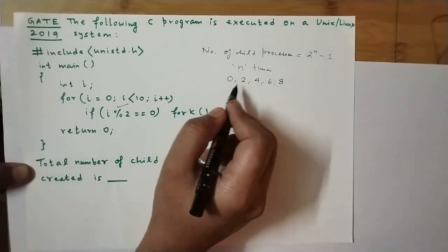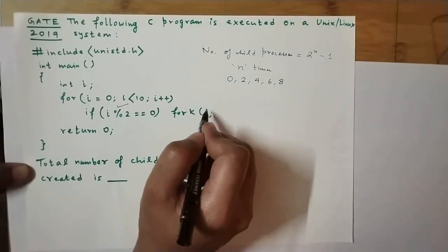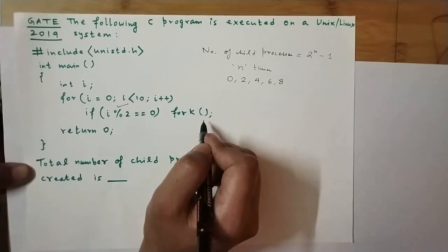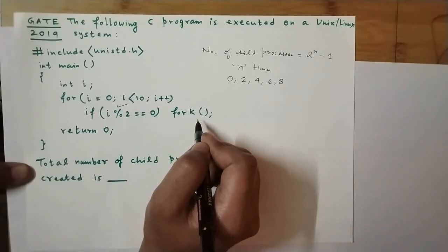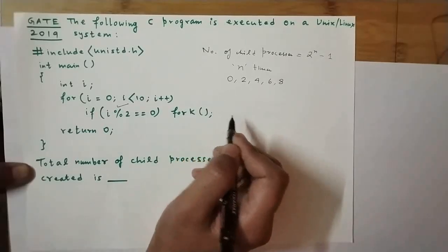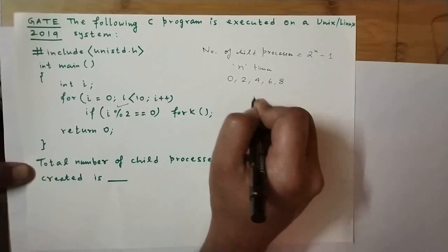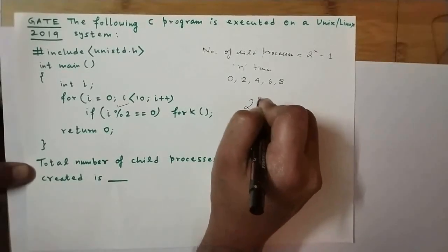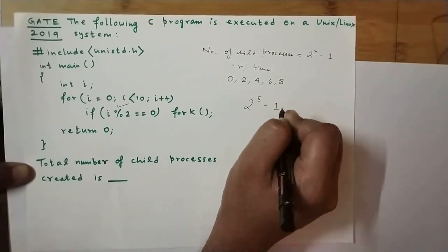So for each of these even numbers, the fork system call will be executed. This loop will run 10 times as we know, and fork is invoked 5 times, leading to the creation of 2 to the power of 5 minus 1 child processes.